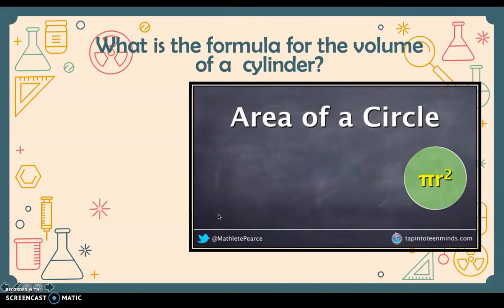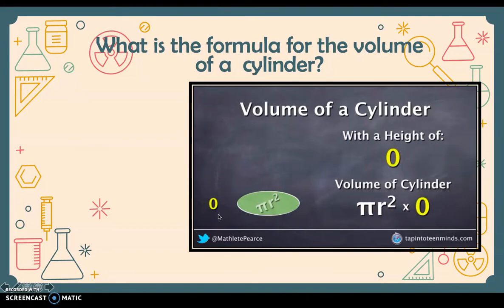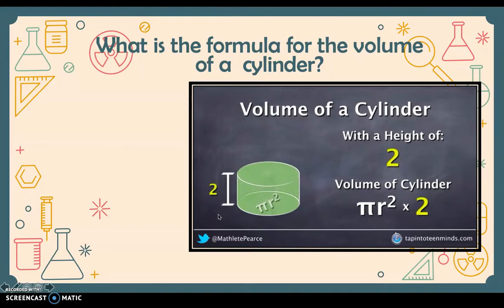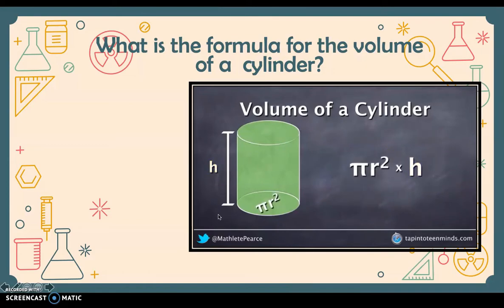We'll cover where 0.86r squared comes from in another video. Going back to the base of our cylinder — a circle — we know how to find the area of a circle. The area of a circle essentially represents the volume of a cylinder with a height of just over 0. As height increases to one unit, the volume is pi r squared times 1. Increasing further: pi r squared times 2, times 3, and finally we substitute any height using the variable h. So the volume of a cylinder is pi r squared times h.